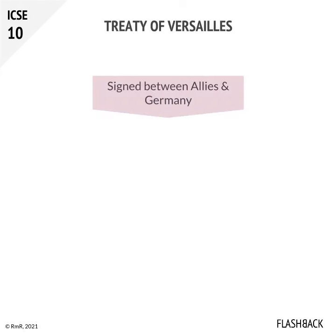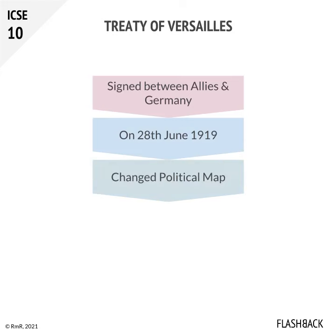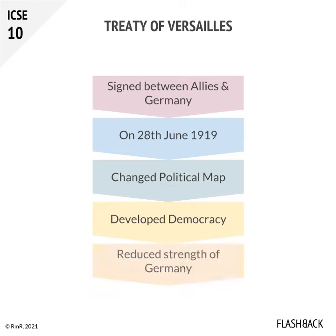The Treaty of Versailles was signed between the Allies and Germany on the 28th of June 1919. This treaty had great territorial rearrangements, which changed the political map of the world. It gave a serious blow to monarchy and developed democracy in Europe. It reduced the strength of Germany.